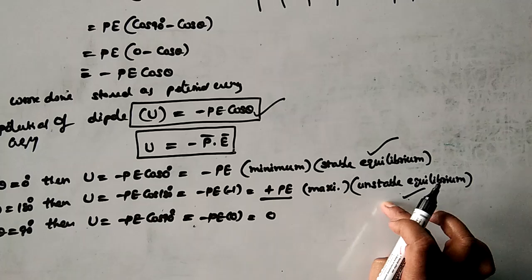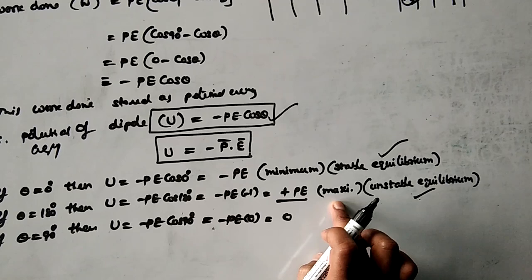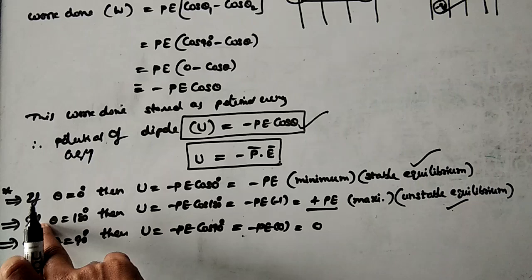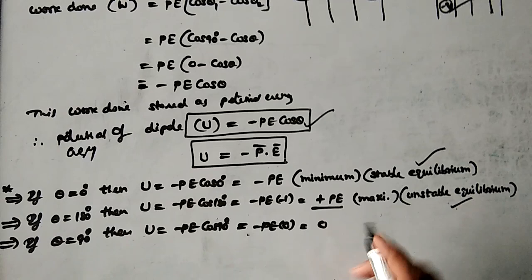On the basis of these concepts you are going to get numerical questions and applications, and these two questions are asked so many times in exams. When the dipole will get maximum potential energy, theta = 180°, meaning the dipole is opposite to the electric field. When the dipole will get minimum potential energy, theta = 0°, meaning the dipole is parallel to the direction of the electric field. Don't neglect these two sentences — very very important, keep in mind.